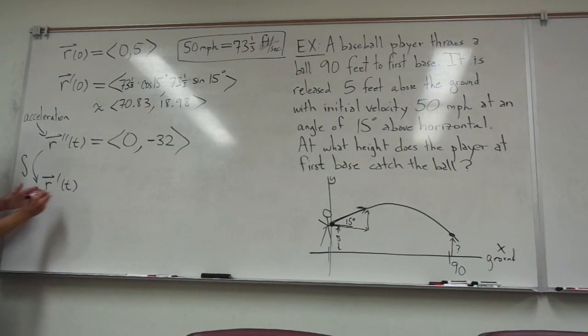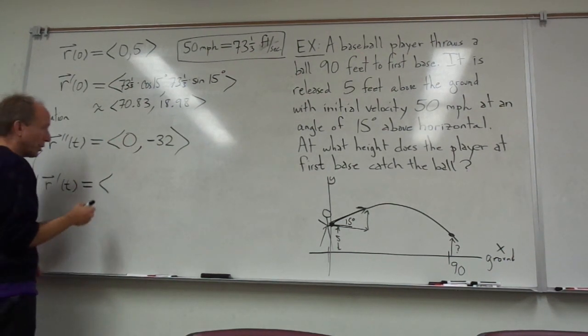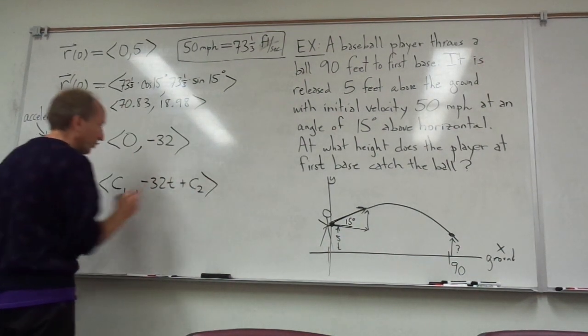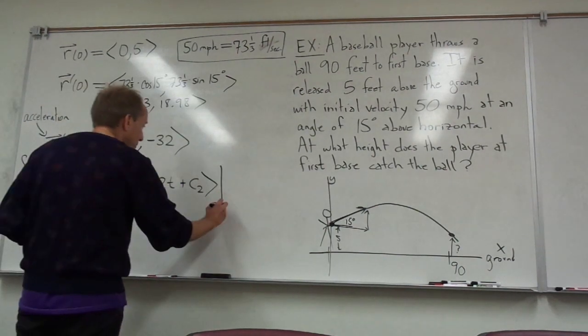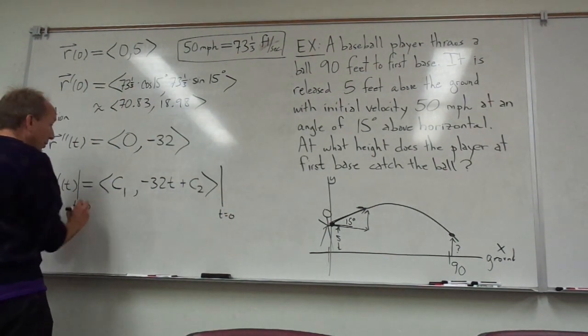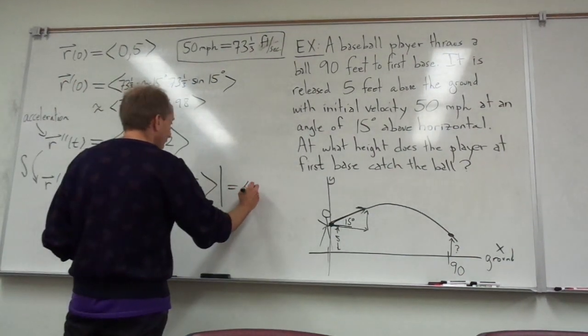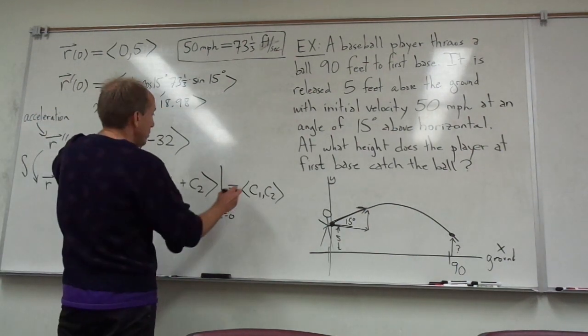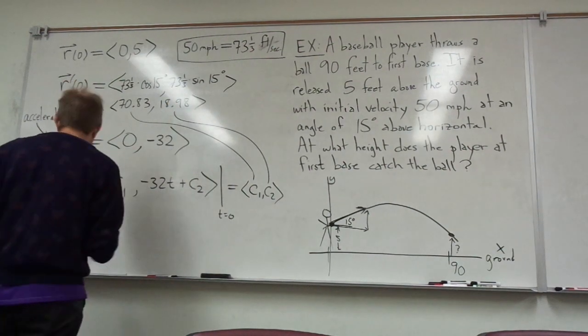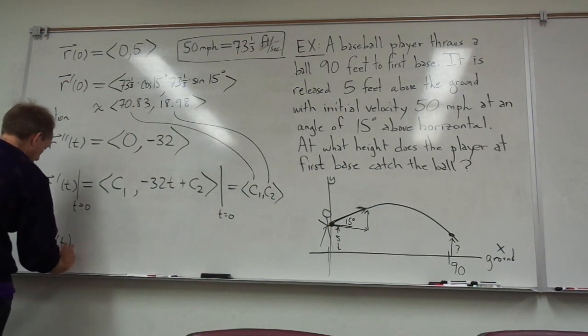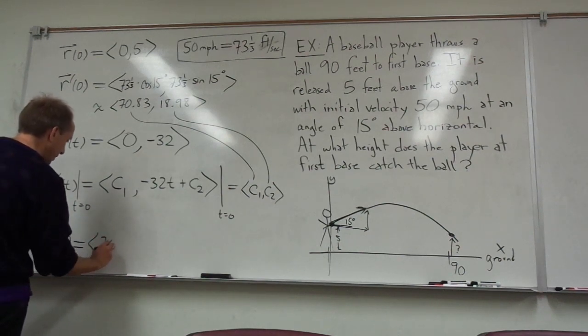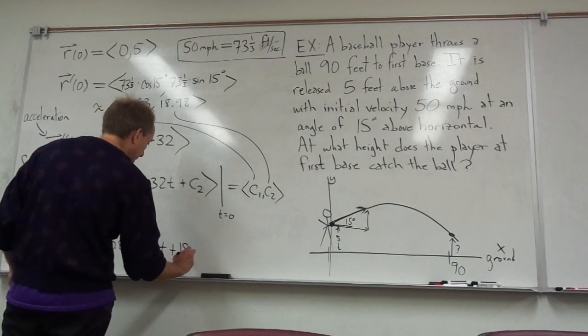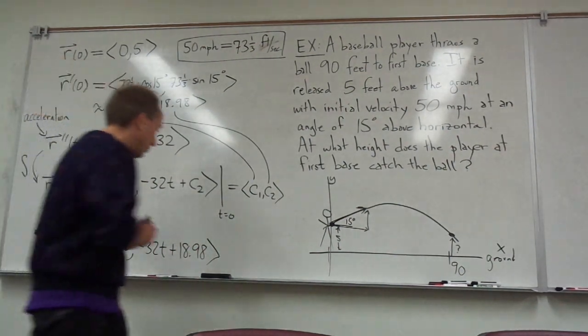What we have to do now is integrate this twice to get our position function. When I do one integration, I'll get back to my velocity. The integral of zero is zero plus a constant C1, and the integral of negative 32 is negative 32t plus C2. Now here is where you can evaluate this at time zero to figure out what C1 and C2 are. If you plug in zero for the time, you're going to get C1 and C2, and we already know what r'(0) is. C1 has to be 70.83, and C2 has to be 18.98. So we know that r'(t) is going to be, the first component is 70.83, and the second component is -32t + 18.98. So we got our velocity at this point.